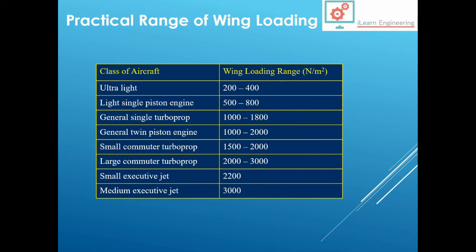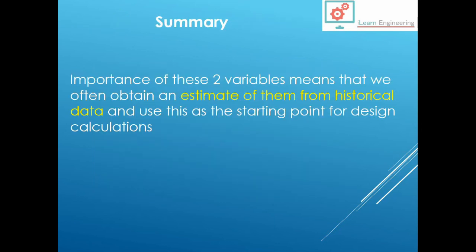And you'll use these values to input into your design calculations that follow next. So in summary, you can see the importance of these two variables. It means that we can start to estimate them from historical data, because there's quite a lot of consistency in them, and you can use that as a valid starting point for design calculations that follow next. So if you know the thrust to weight ratio, the T over W, and you know the maximum takeoff weight, then therefore it's not a huge step to work out the thrust, and then from the thrust you can start to select different propulsion units for your design.